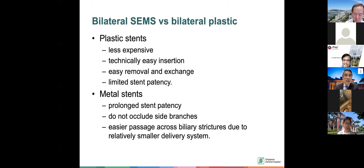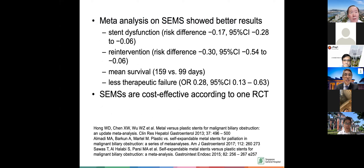In summary, bilateral versus unilateral, and plastic versus metal: plastic stents are less expensive, technically easy to insert, easy for removal and exchange, but have limited patency. Metal stents have prolonged patency, do not occlude side branches unless fully covered, and may have easier passage due to relatively smaller delivery systems — usually 8.5 French, or more recently 6 French stents for side-by-side metal stents. Stent dysfunction was actually better with metal stents, and they are more cost-effective in one RCT.